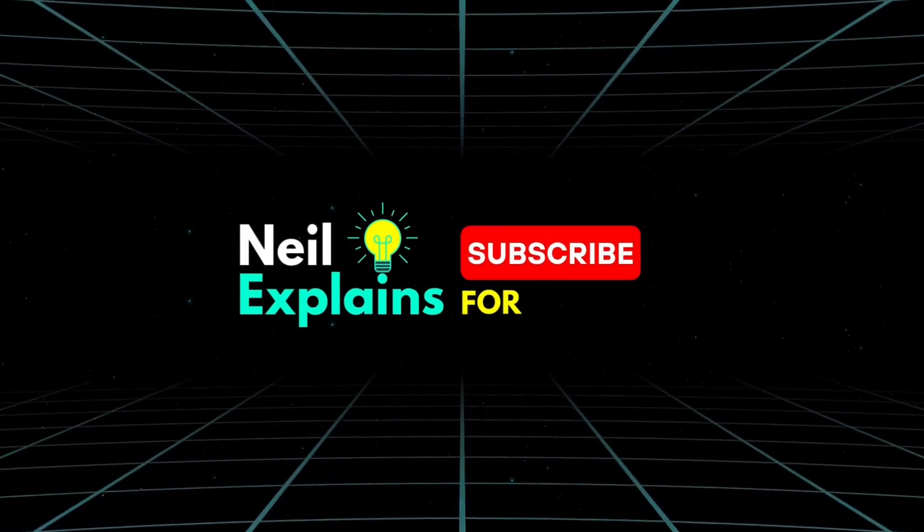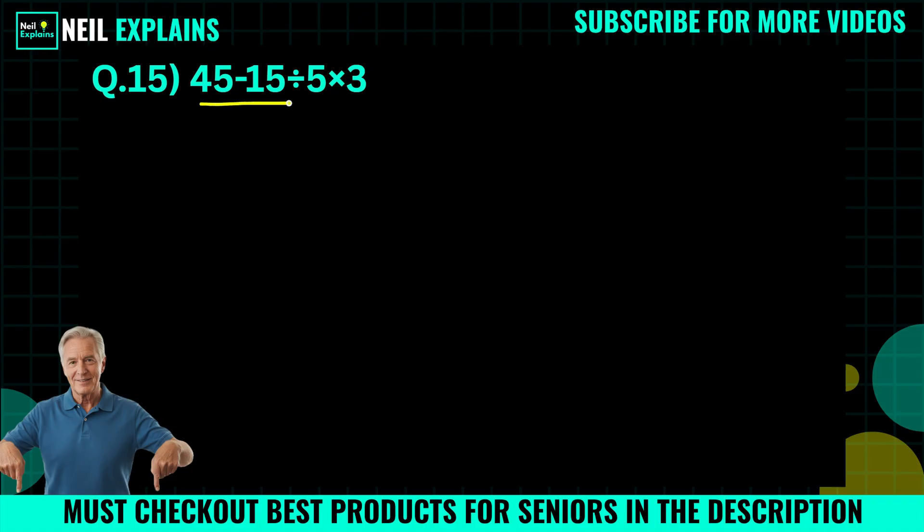Hello everyone and welcome back to Neil Explains. Today I come with this very tricky math question. Question number 15: 45 minus 15 divided by 5 times 3. Try to solve it on your own.